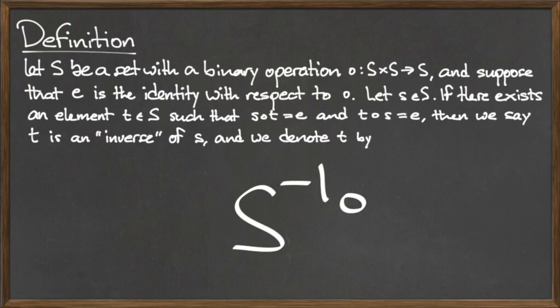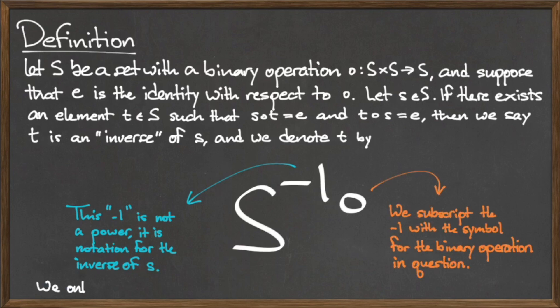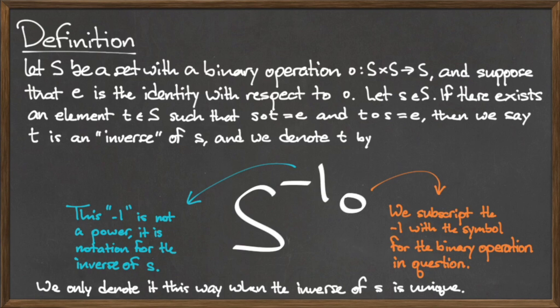There are a few important notes to make about this notation. The first is that the negative one is not a power, but is rather a notation that we use specifically to denote an inverse. We subscript the negative one with the symbol for the binary operation in question. A final note is that we said in the definition that if such an element t exists, it is an inverse of the element s. However, we only use the s-inverse notation when this element t is unique.